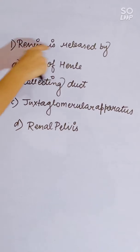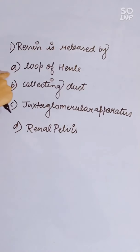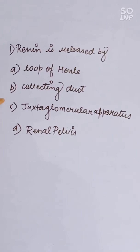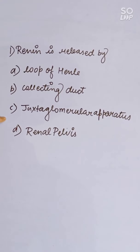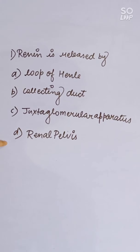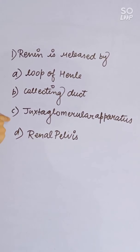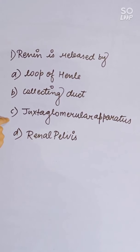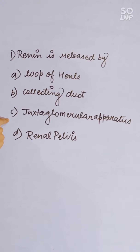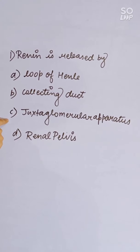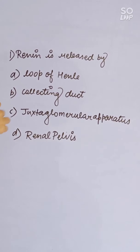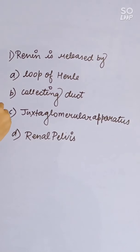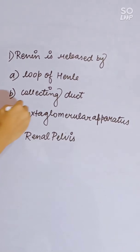Renin is released by: loop of Henle, collecting duct, juxtaglomerular apparatus, or renal pelvis. The juxtaglomerular apparatus releases renin. Correct answer is C.